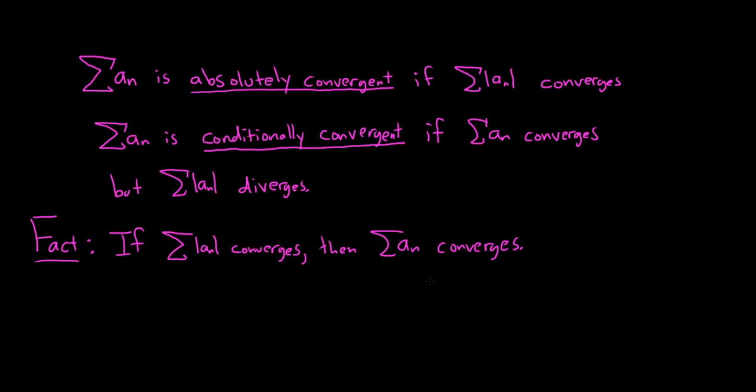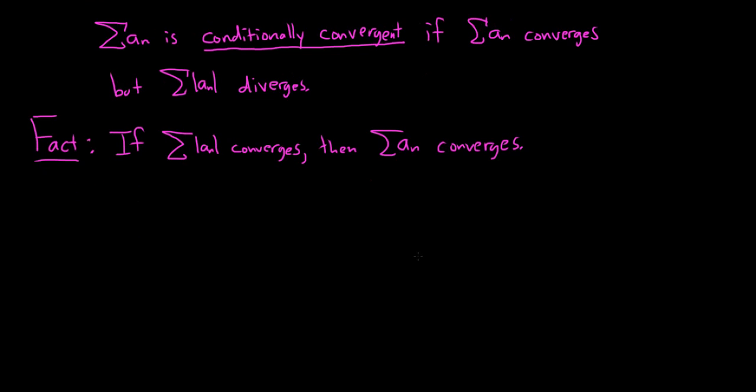So whenever you have absolute convergence, you just have convergence and you're good. Let's go ahead and do an example of a series where we determine if it's absolutely convergent, convergent conditionally, or divergent. So let's try a classic example.